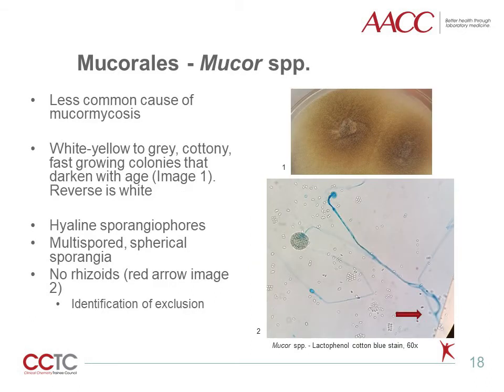Mucor species is a less common cause of mucormycosis. It forms white to yellow-gray, cottony, fast-growing colonies that darken with age, as seen in image one. The reverse is white, and microscopically the sporangiophores are mostly hyaline. Multispored, spherical sporangia can be seen as pointed out by the red arrow in image two. But it lacks rhizoids. Other Mucorales need to be excluded to reach this diagnosis.